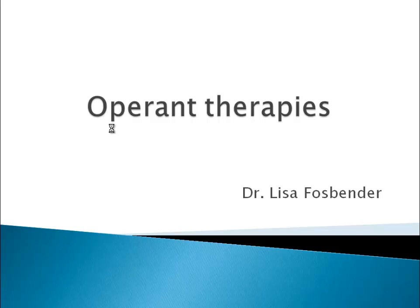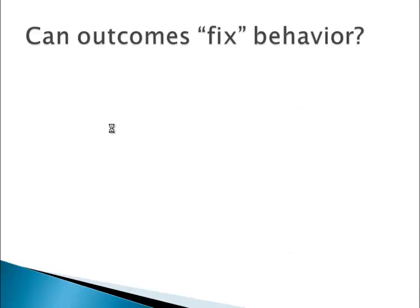Greetings and welcome to another lecture in Introductory Psychology. This one involves therapies that themselves involve operant conditioning. Operant conditioning is where voluntary behavior is controlled and conditioned according to its outcomes. If the behavior occurs and then something good happens, the individual is more likely to do that behavior. If they do a behavior and something bad happens, they're less likely. It's the law of effect, and the idea here is to use the law of effect to try to change behavior.